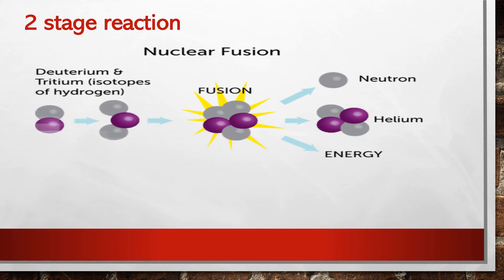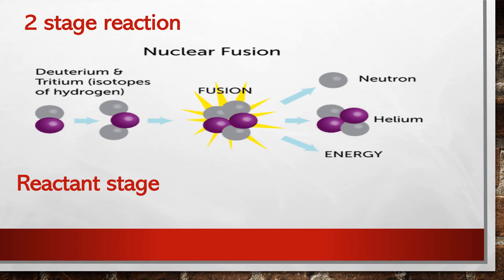Now let's study the properties of nuclear fusion reaction. Nuclear fusion reaction is a two-stage reaction — there is no intermediate stage. In the first stage, called the reactant stage, deuterium and tritium combine together and fuse. In the second stage, called the product stage, we get helium and a neutron with the release of a large amount of energy. So in nuclear fusion reaction, there are only two stages: reactant stage and product stage.